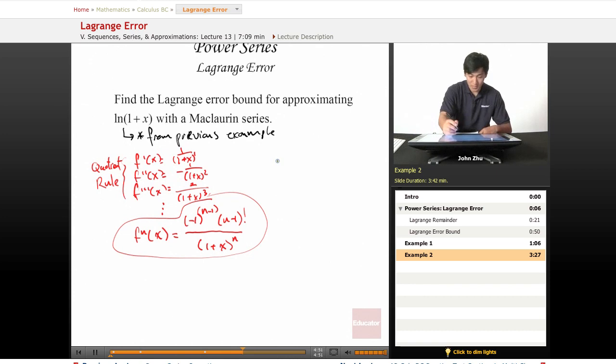Our error bound formula states that the bound is less than the max of f^(n+1)(c) times |x-a|^(n+1) over (n+1)!.